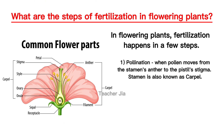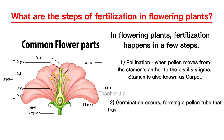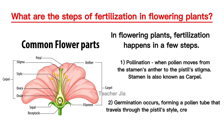Stamen is also known as carpel. In the diagram you can see where it's labeled carpel — it encompasses the anther and the filament. Then we have germination, which occurs forming a pollen tube that travels through the pistil style, creating a path for sperm to reach the ovary.